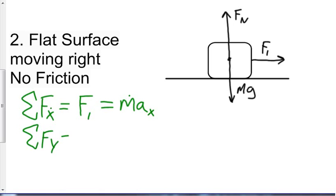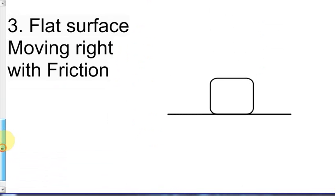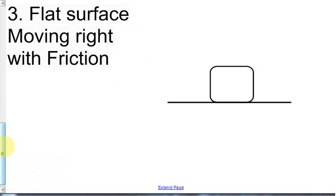Summing forces in the y-direction: I have the normal force acting up and mg acting down, so ΣFy = FN − mg. Since it's not moving in the y-direction, the acceleration in y is zero, so the sum equals zero — just like in the first scenario. When you know something is not accelerating in a direction, you simply set that sum equal to zero.